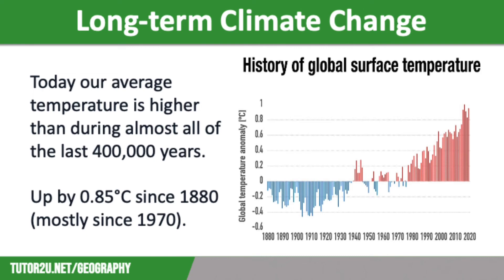Some people refer to the whole of the Quaternary period as an ice age because of the permanent ice sheets on Antarctica and Greenland. However, today our average temperature is higher than during almost all of the last 400,000 years. Since 1880, the average global temperature has risen by 0.85 degrees, and most of this has happened since 1970. You can see this dramatic increase in global temperatures on the graph on the screen.